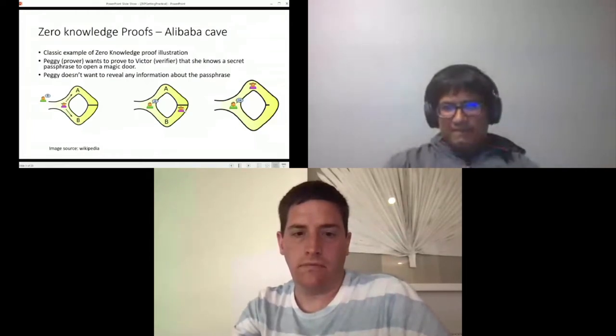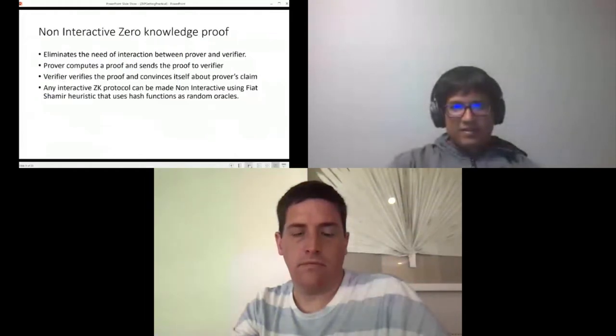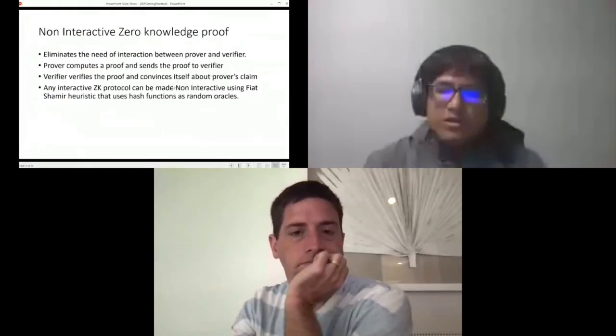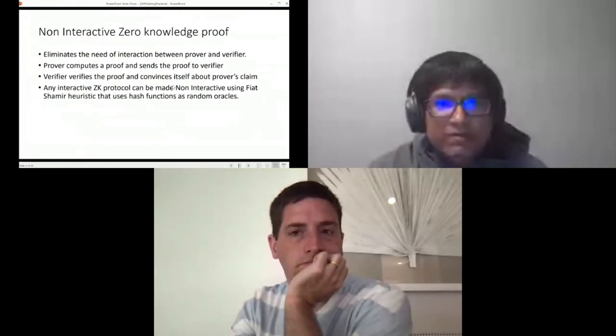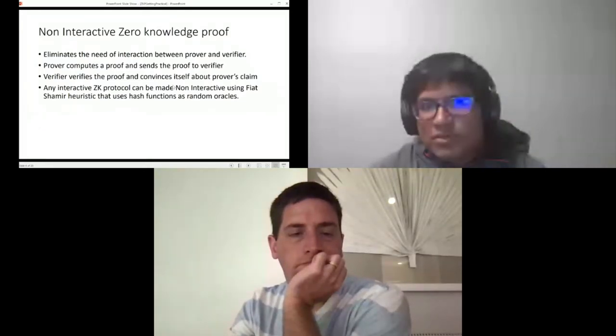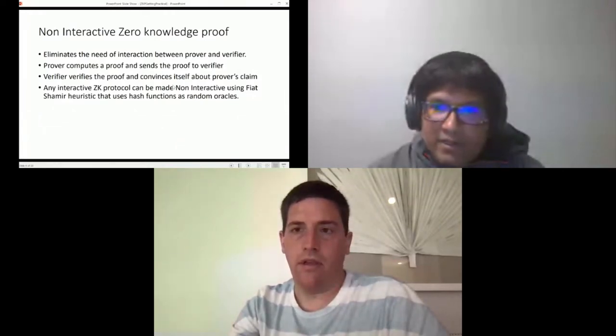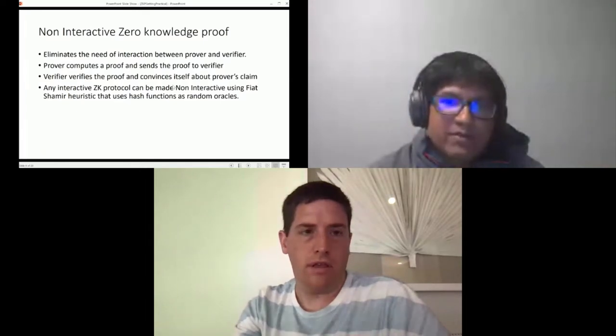The previous protocol was interactive, but in real life scenarios, if we can have a non-interactive zero-knowledge proof that is much more helpful. In case of non-interactive proofs there is no need of interaction between the prover and the verifier. The prover computes the proof and sends the proof to the verifier, and the verifier then verifies the proof and convinces itself about the prover's claim.